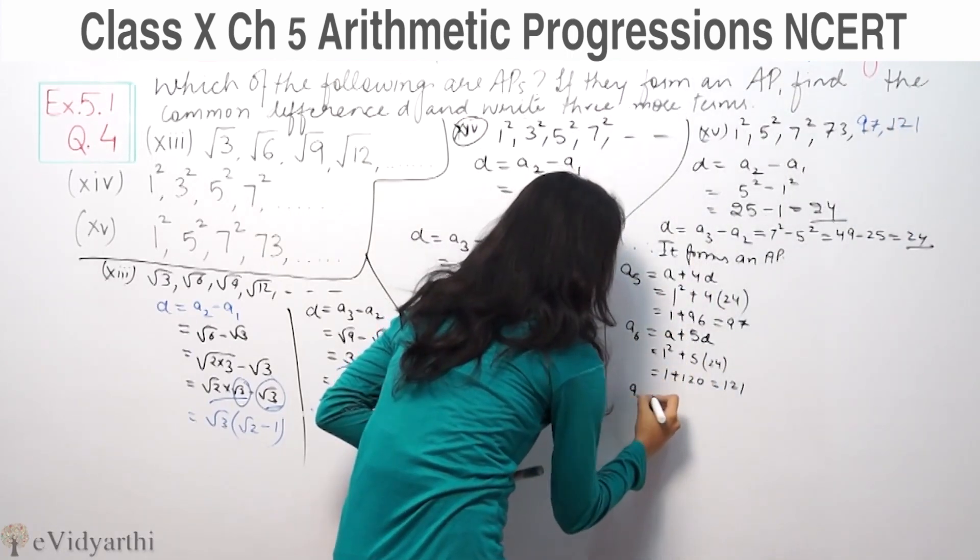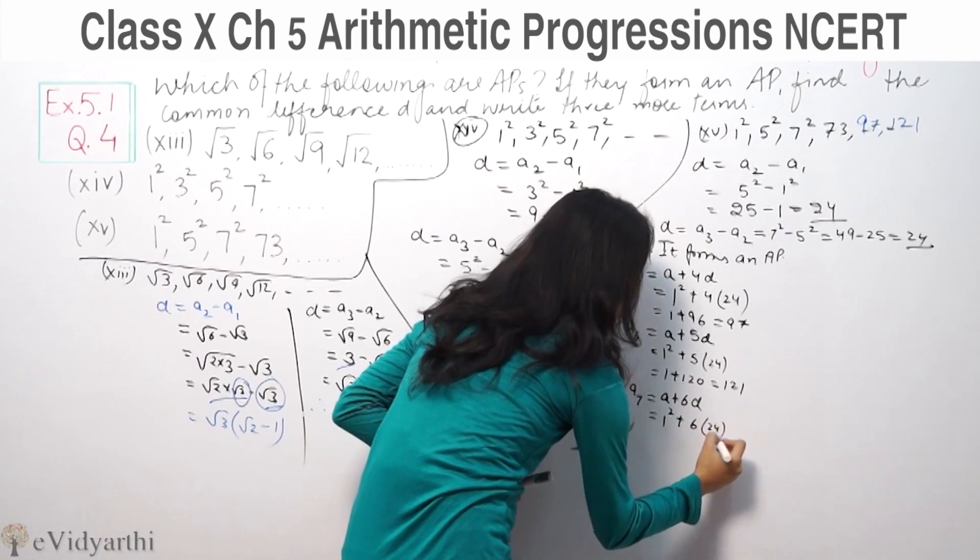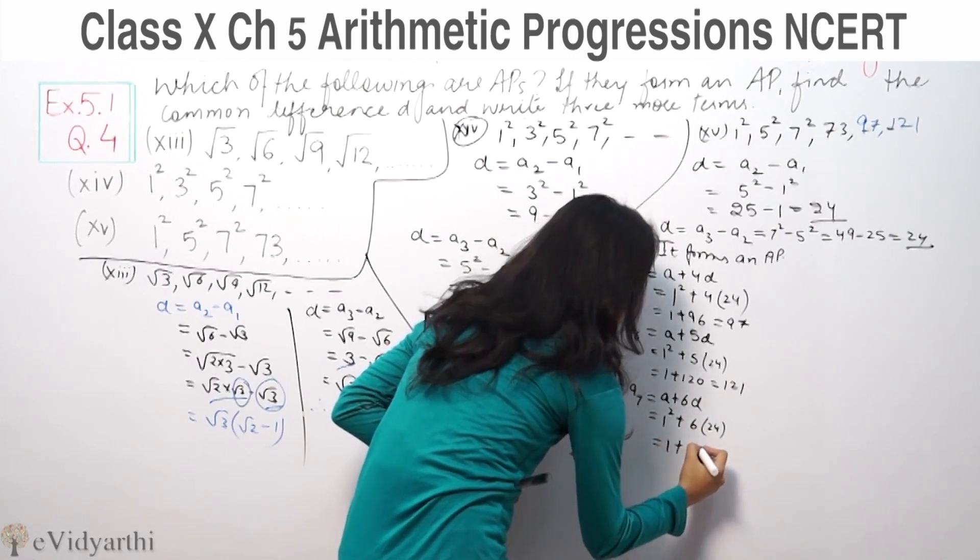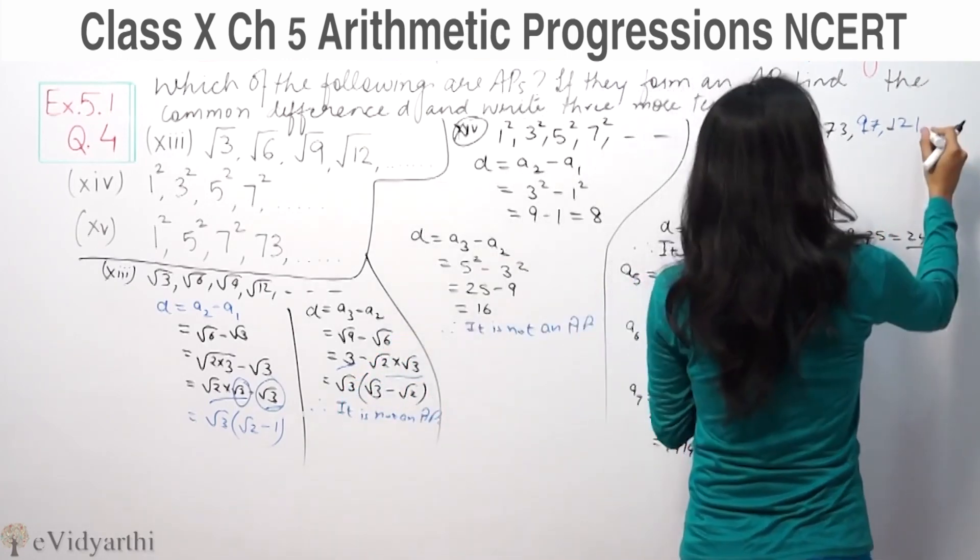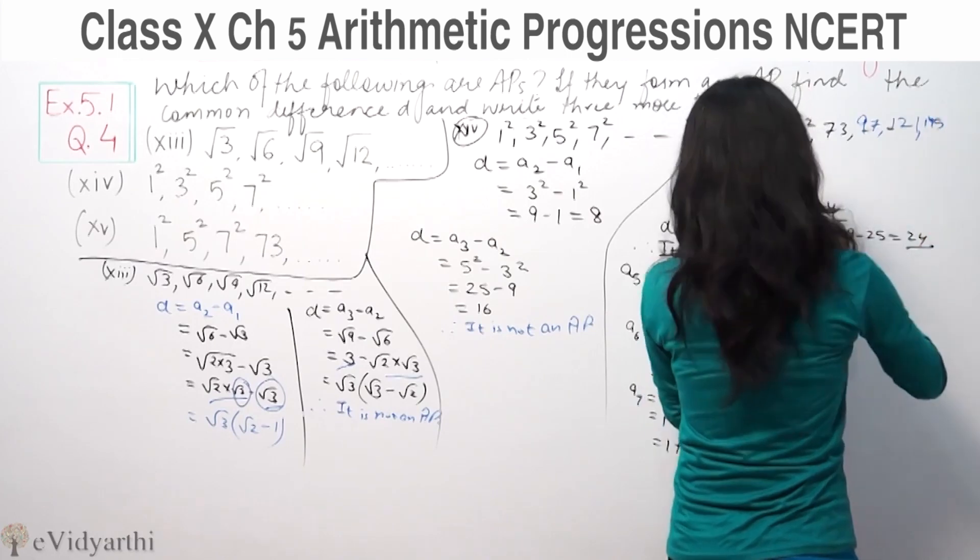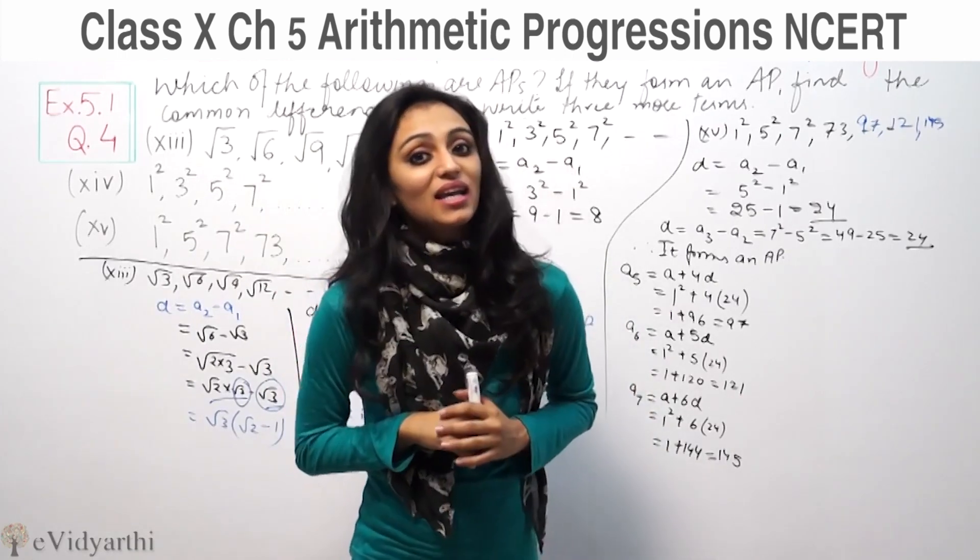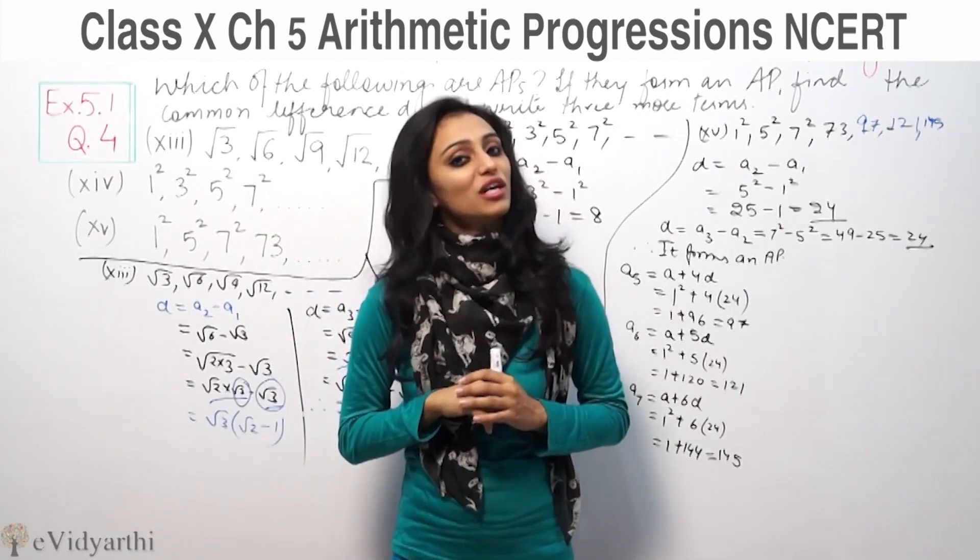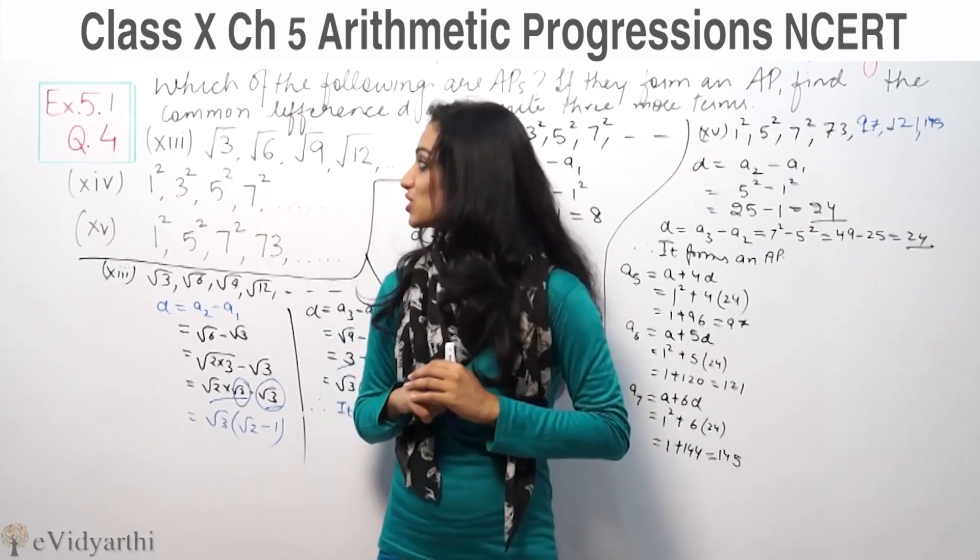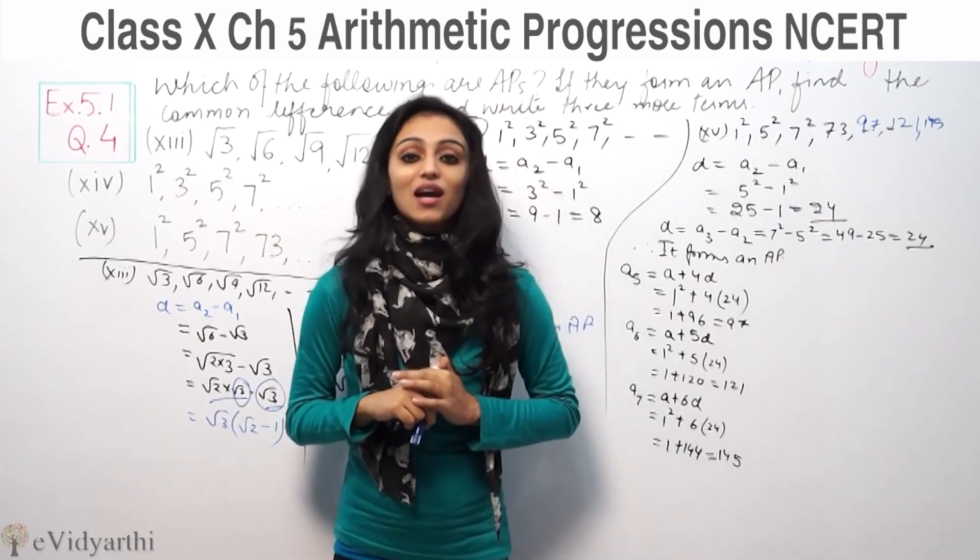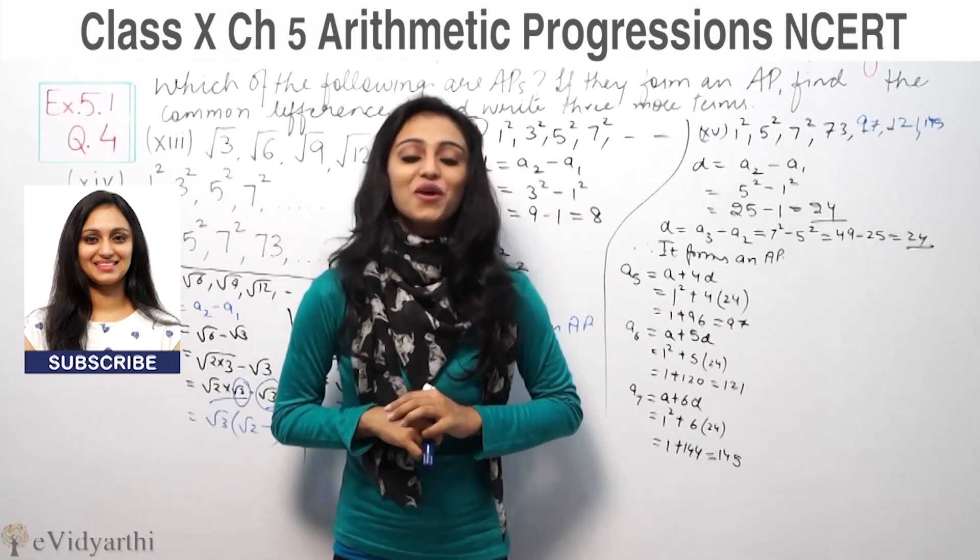Same way we check A7, which is A plus 6D. First term is 1 plus 6 times 24, which equals 1 plus 144, which is 145. Do watch the next video for some more questions. Goodbye.